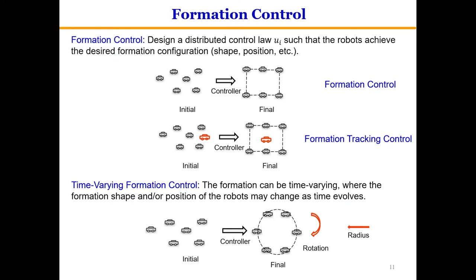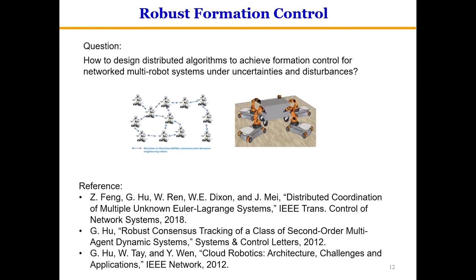Formation control is one of the important issues in multi-robot coordination. According to the formation configuration, there can be formation tracking control and time-varying information control. The intuitive concept of formation control is to design a suitable controller so that the robots form the desired formation, which can be described by shapes, positions, distances, etc. In practice, disturbances and model uncertainties are very common for multi-agent system applications, especially for underwater robots and UAVs, motivating the study of robust formation control problems.